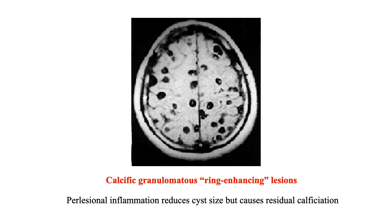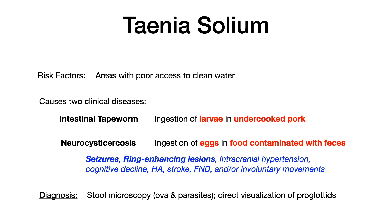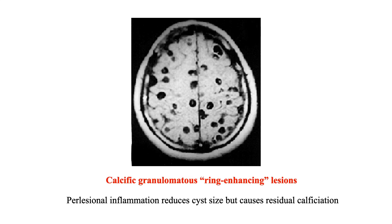The test writer can force you to differentiate neurocysticercosis against other causes of ring-enhancing lesions. Also note that the cysts aren't always large, because perilesional inflammation in the CNS actually reduces cyst size, leaving residual calcification that can cause more neurological symptoms. So if you see this image, you're dealing with Taenia solium — specifically neurocysticercosis — where eggs in fecally contaminated food cause neurological symptoms and ring-enhancing lesions.